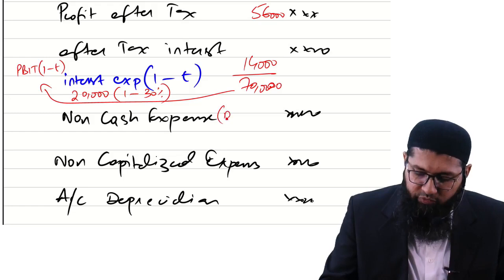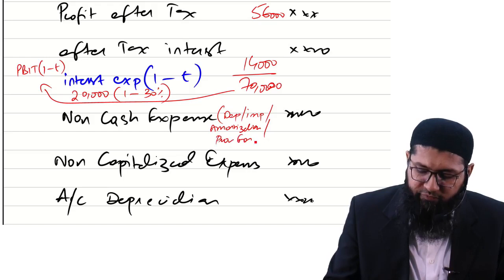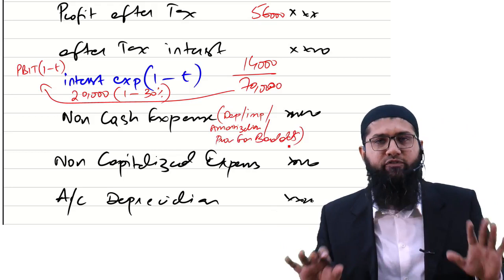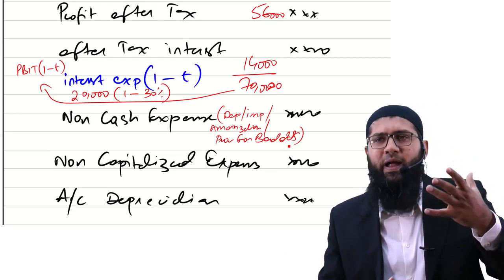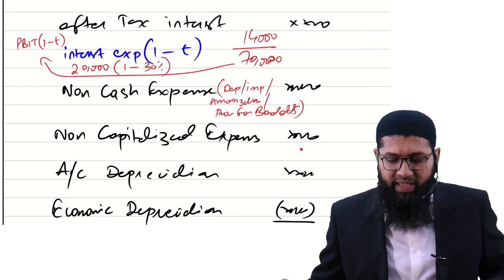Non-cash expenses — such as depreciation, impairment, amortisation, and provisions for bad debt — must all be added back. This is because we need to calculate NOPAT as close to cash flows as possible, and these are non-cash items that reduce accounting profit without being cash outflows.